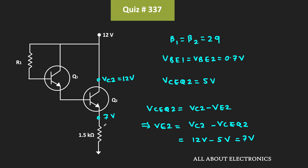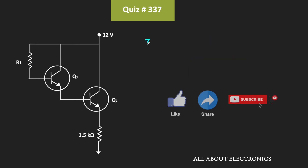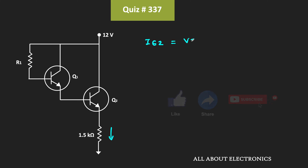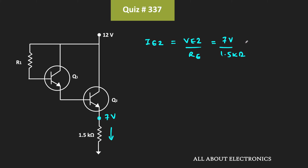From this we can find the required current through transistor Q2. The emitter current IE2 = VE2 / Re = 7V / 1.5kΩ = 4.666mA. In this way we found the value of the required emitter current through transistor Q2.